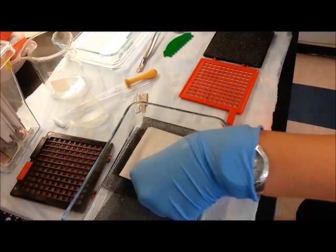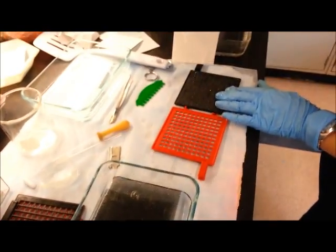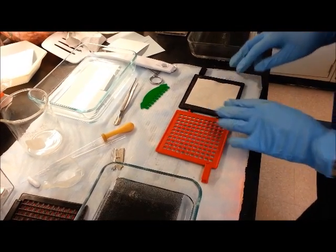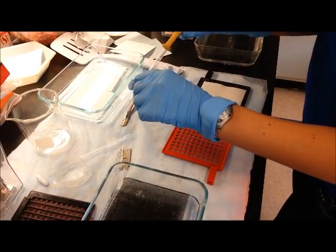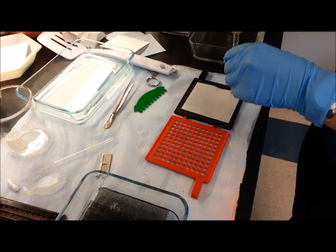Wet one sheet of the filter paper in transfer buffer and place it on the sponge sheet. Using a pipette, saturate the filter paper with transfer buffer and make sure that there are no air bubbles.